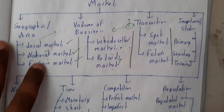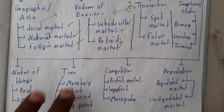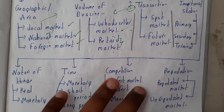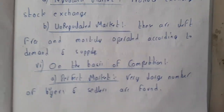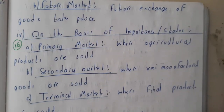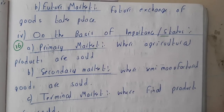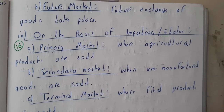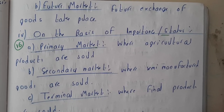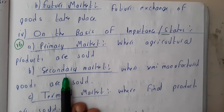After that we'll be discussing regulation market and competition market. According to status, a primary market — the best example for it will be agricultural products, because those are raw products. You need to do something on them to get your final product, like your curry or anything like that. That is the reason why those belong to the primary market.